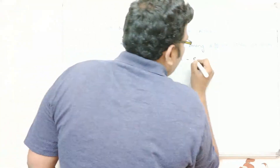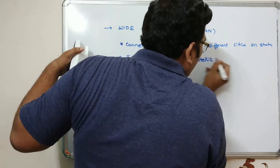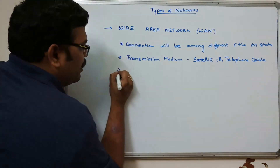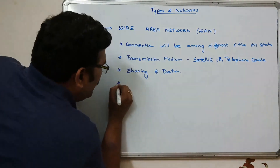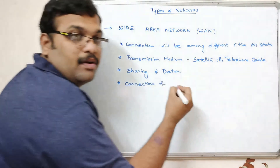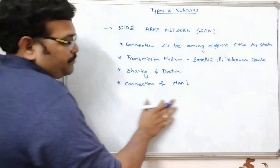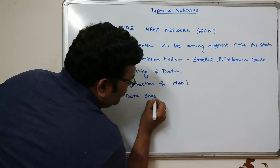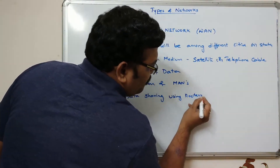The transmission medium for WAN will be satellite or telephone cable. The main purpose of Wide Area Network is also sharing of data. It is a connection of metropolitan area networks, and with the help of routers, data sharing is done using telephone cables or satellite.